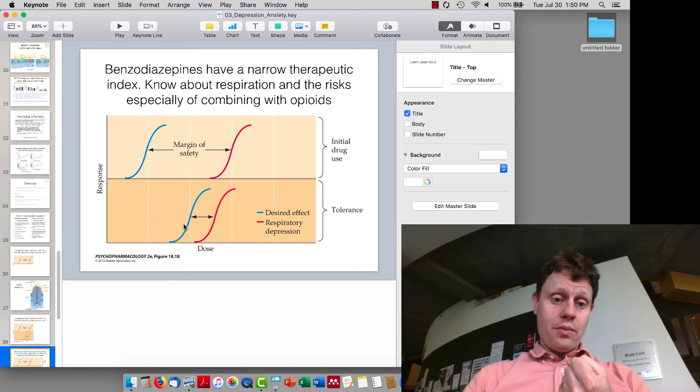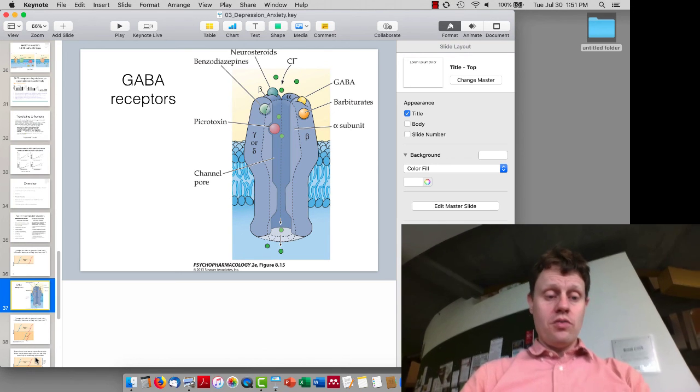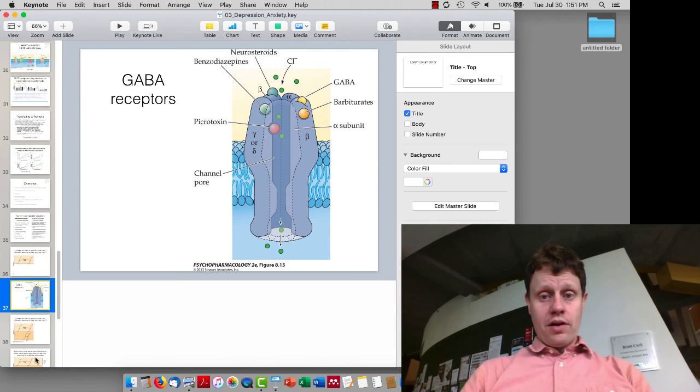And there's a much narrower window before you get to inhibiting the brainstem to the point that it leads to slowed respiration.